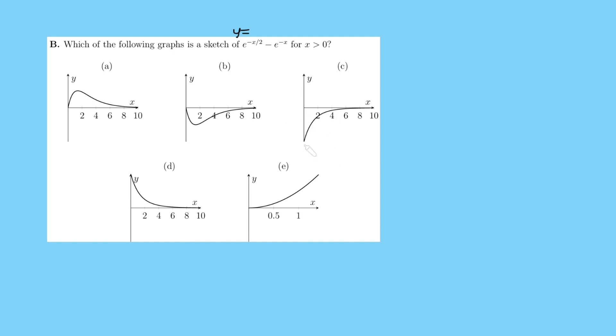So the first thing I like to do is think about the intercepts of this graph. Now I know it says that x has to be positive, but we can just make x tend towards 0 and work out what the y intercept should be. So when we sub in x equals 0, we get y is e to the 0 minus e to the 0, which is 1 minus 1, which is 0. So the graph has to pass through the y axis at 0. So that eliminates this option and it eliminates this option. So we're left with three possibilities here.